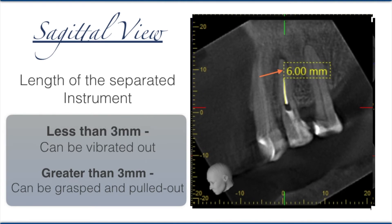The next view I wanted to see is the sagittal view — I want to know the length of the separated instrument. The arrow mark shows the length; I measured it at about six millimeters. The length of the separated instrument tells me what technique to use. If the length is less than three millimeters, most of the time I can vibrate it out with ultrasonics.